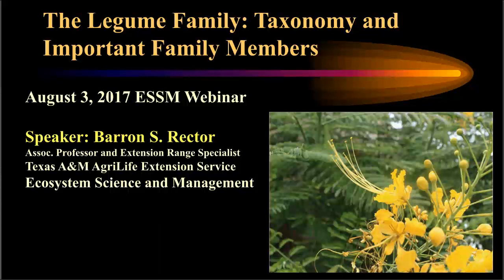Notice the picture on the title slide — the flowers are very showy, in this case yellow. The structures coming out of the flower are the anthers, and at the end of the filament is a pollen sac. In this flower, similar to bird of paradise ornamental, nine of the stamens are united at the base and one stamen is free. Many times we're looking at the showiness and color of the flower rather than these structural details.